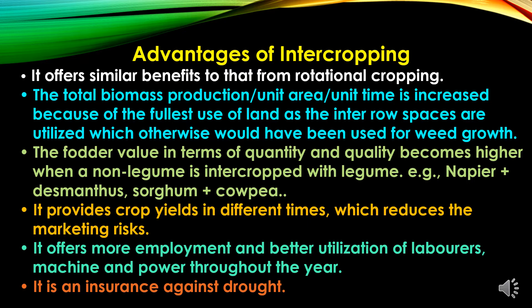Advantages of intercropping: first, it offers similar benefits to that from rotational cropping; second, the total biomass production per unit area per unit time is increased because of the fullest use of land — the inter-row spaces are utilized which otherwise would have been used for weed growth; third, the fodder value in terms of quantity and quality becomes higher when a non-legume is intercropped with a legume, like napier grass grown with Desmodium and sorghum with cowpea; fourth, it provides crop yields at different times which reduces marketing risks; fifth, it offers better utilization of implements, machines, and power throughout the year; and sixth, it is an insurance against drought.